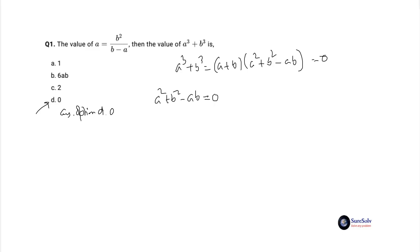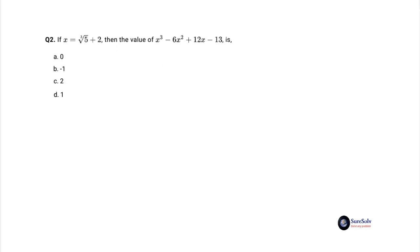Let's solve the second question. Question 2 is: if x equals cube root of 5 plus 2, then the value of x cubed minus 6x squared plus 12x minus 13 is, option a: 0, option b: minus 1, option c: 2, and option d: 1.